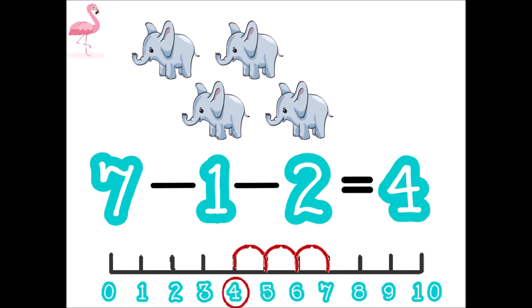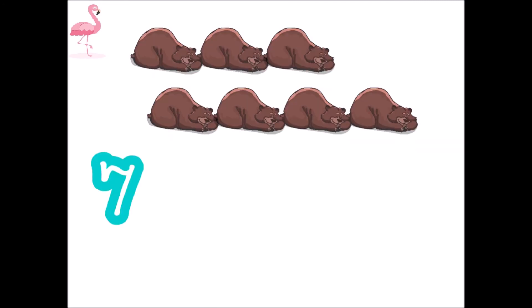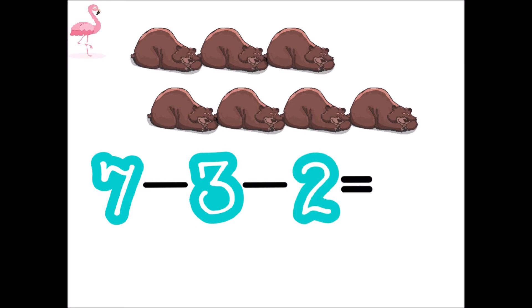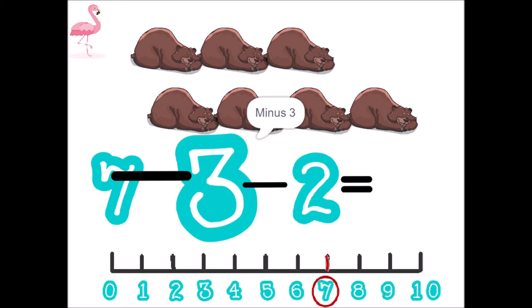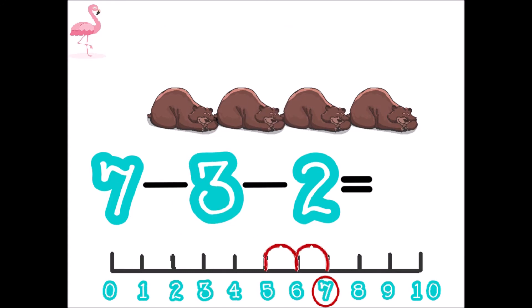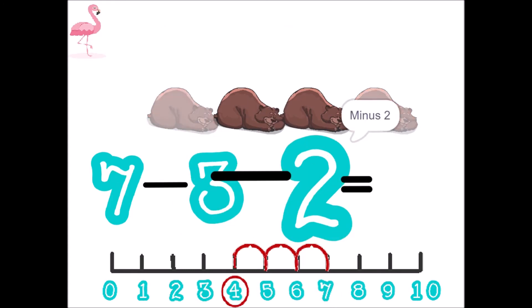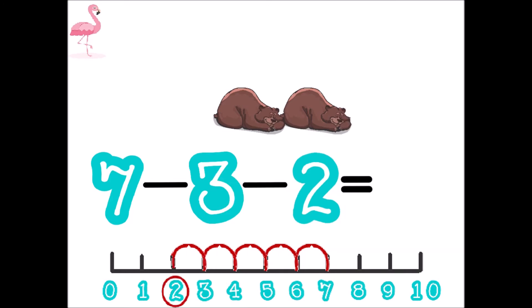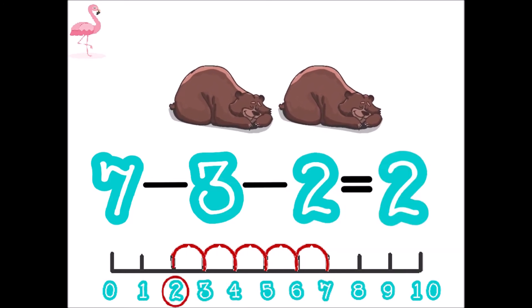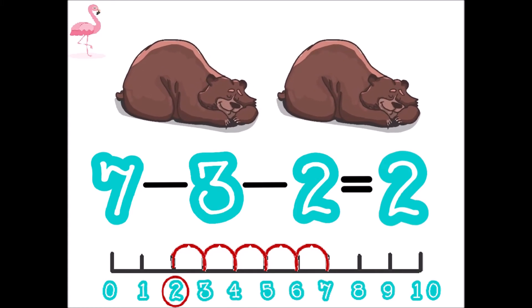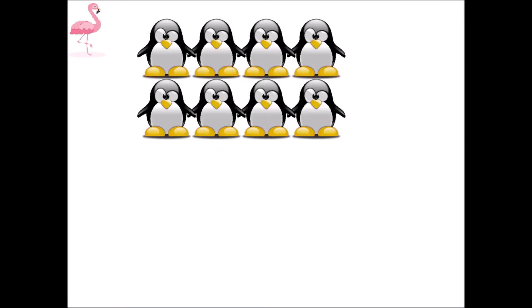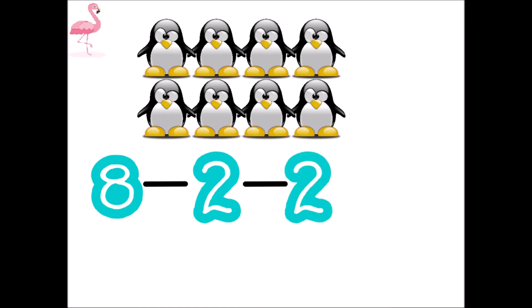Four. Seven minus three minus two equal. Two. Eight minus two minus two equal.